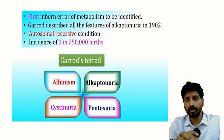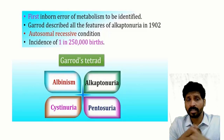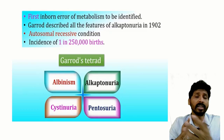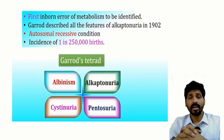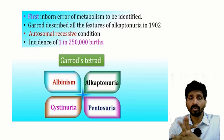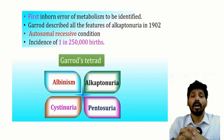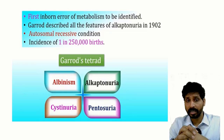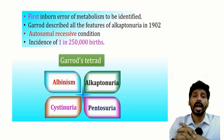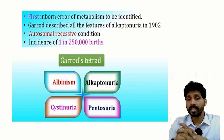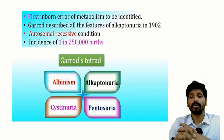Alkaptonuria is the first inborn error of metabolism to be identified. Garrod was the scientist who described its features around 1899–1902. It is autosomal recessive in inheritance, and its incidence is only 1 in 250,000.